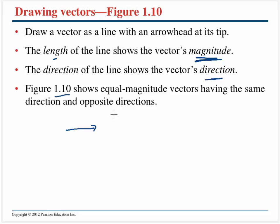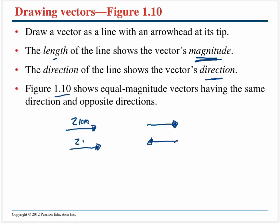If you look at figure 1.10, you might have two vectors with the same length — so they have the same magnitude — as well as the same direction. We could also draw two vectors with the same magnitude but opposite directions. Suppose this vector represents walking two kilometers to the east, and another two kilometers to the east, while a third represents two kilometers in the westerly direction.